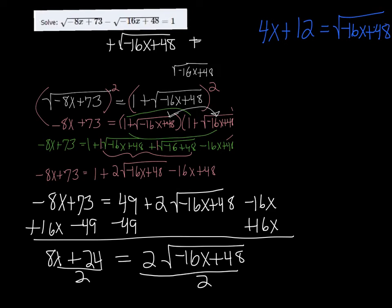Now we're ready to square both sides once again for the last time. So we're going to get 4x plus 12 squared equals, now when I square the right side, the square and the square root cancel each other out.